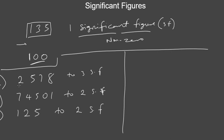For 2578 to three significant figures, we count from the left: one, two, three. So the first three significant digits are 2, 5, 7. Now check: should we increase this 7 by one? The next number after the third significant figure is 8. Is 8 greater than 5? Yes. Because it's greater than 5, we round this off to 8 — adding one to the 7 to make it 8. Then convert the rest of the digits to zero. The answer is 2580.